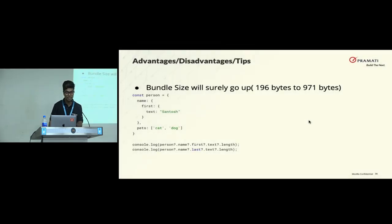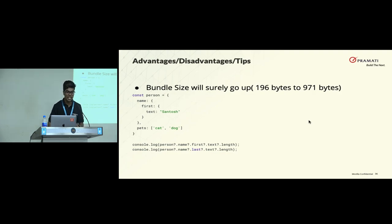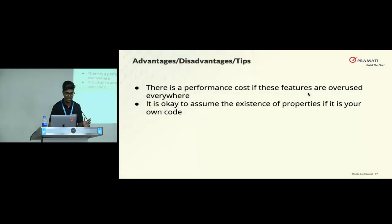There are some advantages and disadvantages as well. Bundle size will surely go up. If you transpile using Babel or TypeScript, the bundle size has increased from 196 bytes to 971 bytes — that's about four times more than the initial code I actually wrote. So there is obviously a performance cost when you have to use it. If something cool comes up in JavaScript, it's definitely going to affect something else.